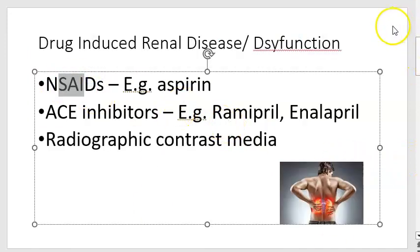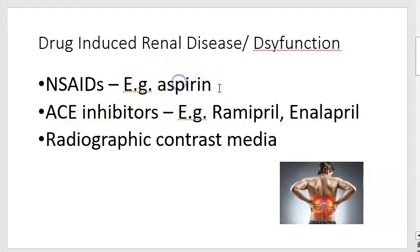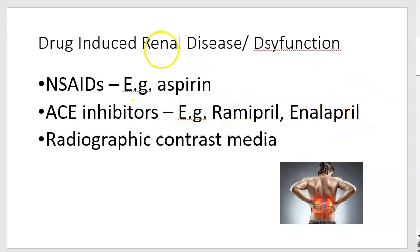Mainly you should know NSAIDs — non-steroidal anti-inflammatory drugs — like aspirin, naproxen, ibuprofen, etc. These are pain medications. Secondly, ACE inhibitors — angiotensin converting enzyme inhibitors — used for managing high blood pressure, examples being ramipril and enalapril. Please remember these.